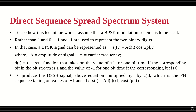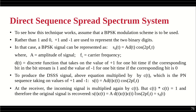To produce the direct sequence spread spectrum signal, the above equation is multiplied by c(t), the pseudo-noise sequence taking values of +1 and −1. At the receiver, the incoming signal is again multiplied by the same pseudo-noise generator output. Since c(t)·c(t) = 1, the two cancel out, leaving the original signal recovered.